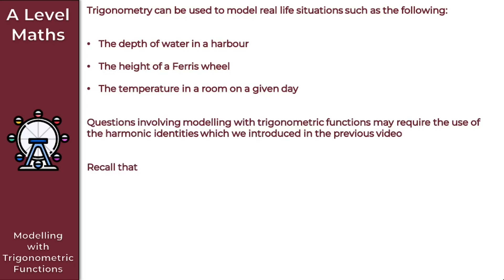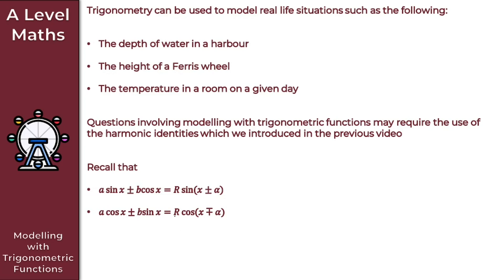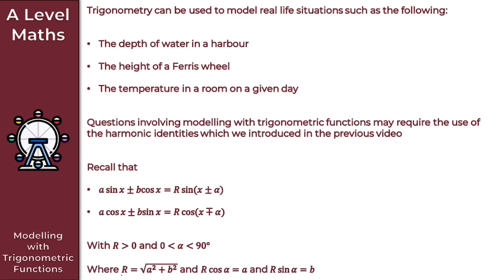Questions involving modeling with trigonometric functions may require the use of the harmonic identities, which you may also know as the R formulae, introduced in the previous video. Recall that A sinX ± B cosX = R sin(X ± α), and A cosX ± B sinX = R cos(X ∓ α), where R > 0 and α is between 0 and 90 degrees (or 0 and π/2 in radians). Here R = √(A² + B²), R cosα = A, and R sinα = B.